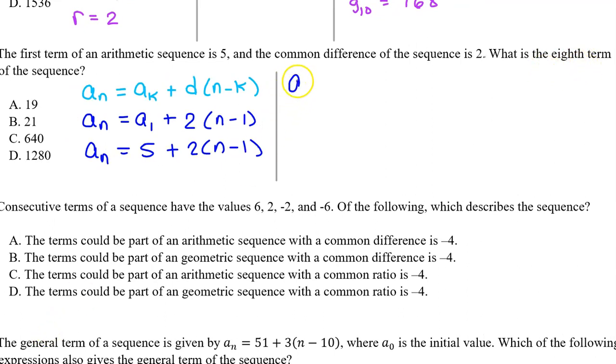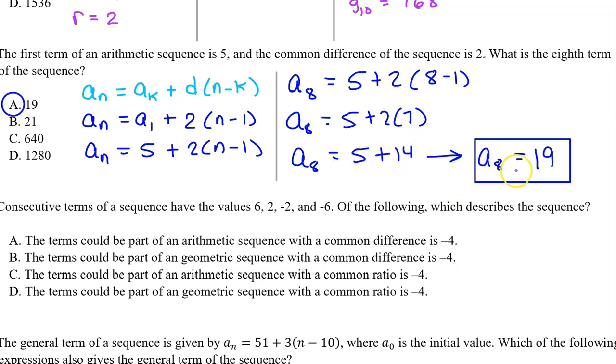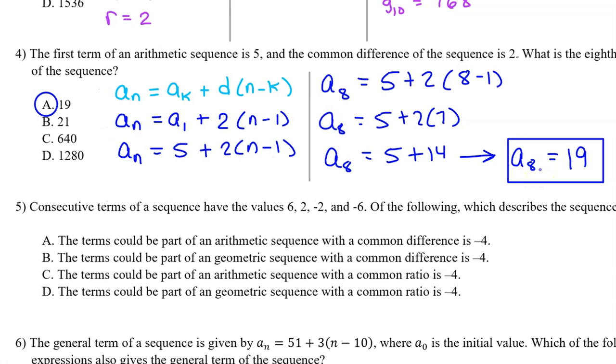The eighth term will be given by a_8, and that will be 5 plus 2 times 8 minus 1. So, 5 plus 2 times 7. So, the eighth term will be 5 plus 14, or a_8 equals 19. So, the answer is A.